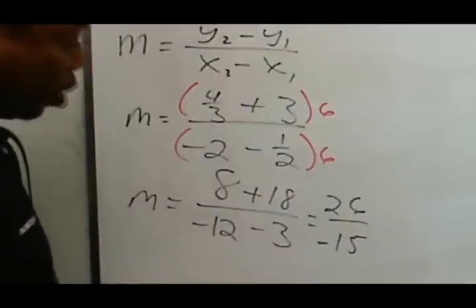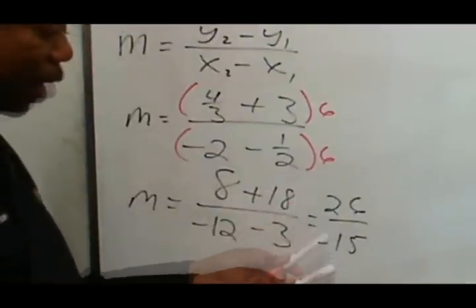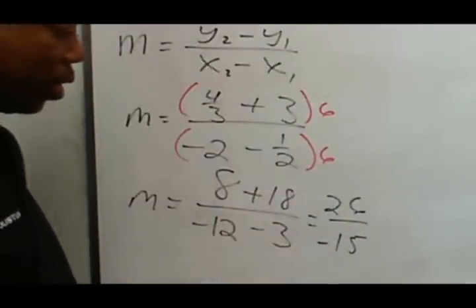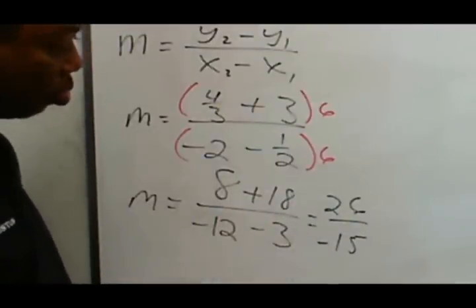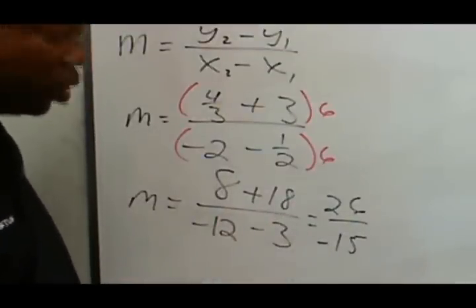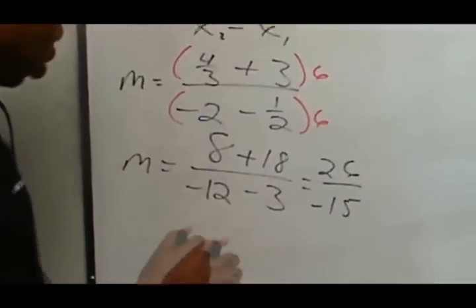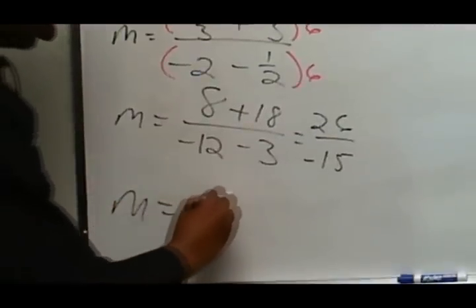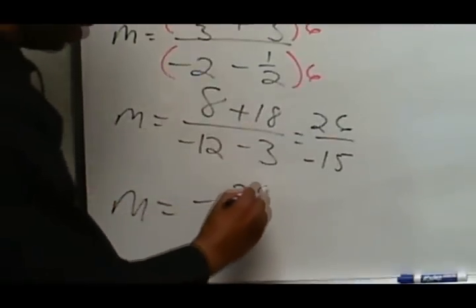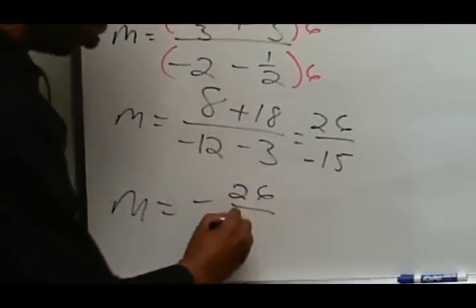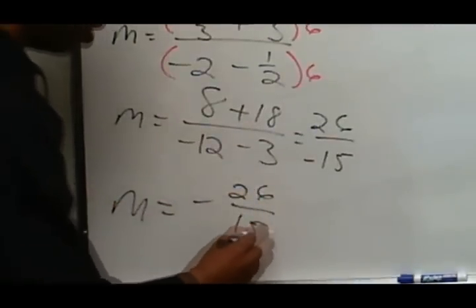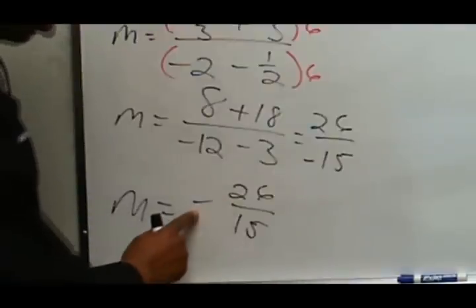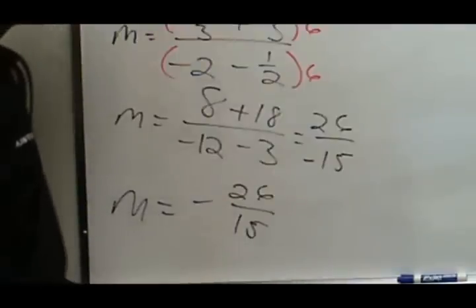Negative 12 and negative 3 give negative 15. There are no common factors we can take out of these two, so the slope is negative 26 over 15. I bring the negative to the outside.